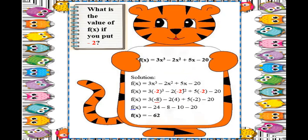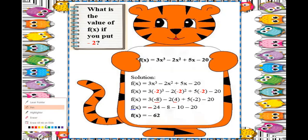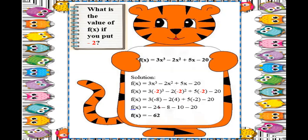Then minus 2: negative 2 raised to 2 is negative 2 times negative 2, which is positive 4. Then plus 5 times negative 2, minus 20. So: positive 3 times negative 8 — different signs — is negative 24. Negative 2 times positive 4 is negative 8. Positive 5 times negative 2 is negative 10. Copy the minus 20.